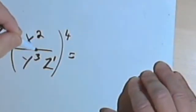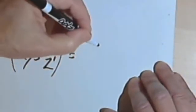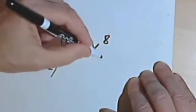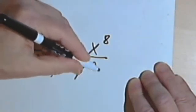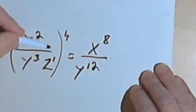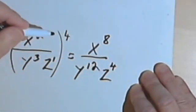So this x squared over y to the third, z to the first, raised to the fourth power is going to be x to the eighth, that's 2 times 4, over y to the twelfth, that's 3 times 4, times z to the fourth, and that was 1 times 4.